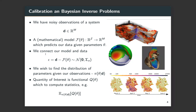This is a mapping from parameters to model predictions of data, and this allows us to make a direct connection. The difference between our data and our model is described as epsilon - hopefully small if you've got a good model. We assume this has some distribution; in this case, we assume the discrepancy between model and data is a Gaussian with zero mean and some covariance uncertainty.